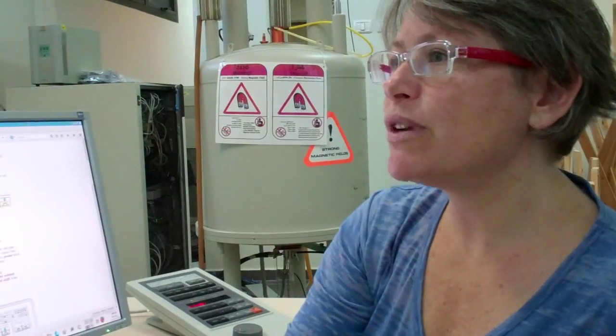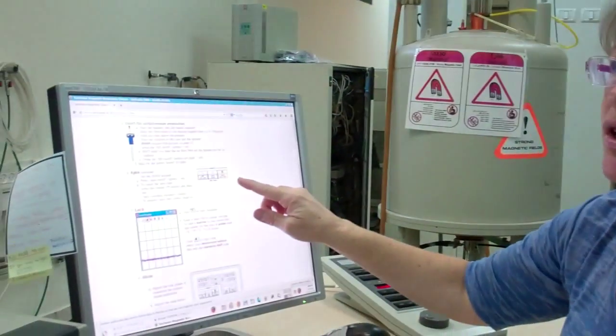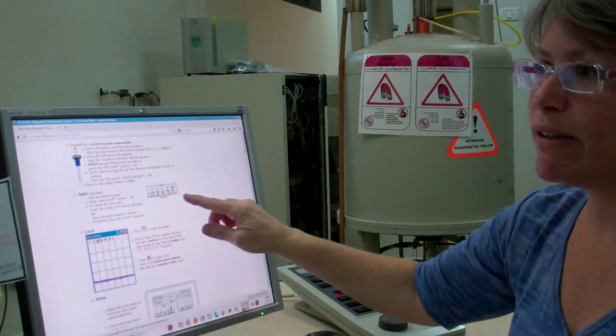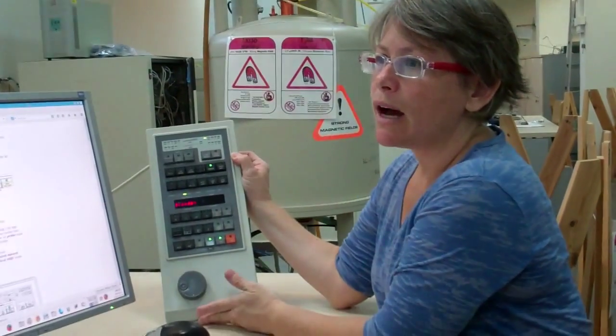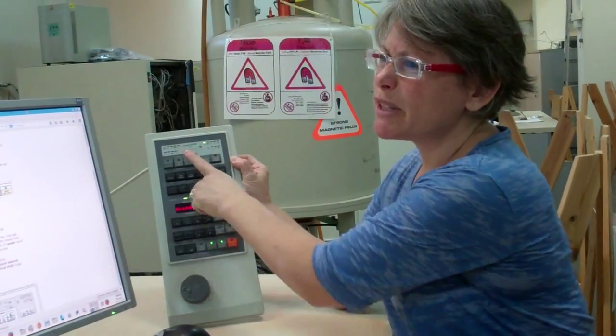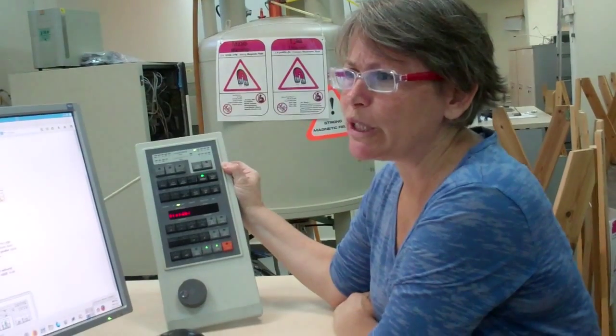We're now on step 3C of the instructions. Notice in the instructions, the buttons in the picture have labels. You can use that to figure out the location of the button on this BSMS keyboard. On the actual buttons that we use the most, the labels have been rubbed off from frequent use.